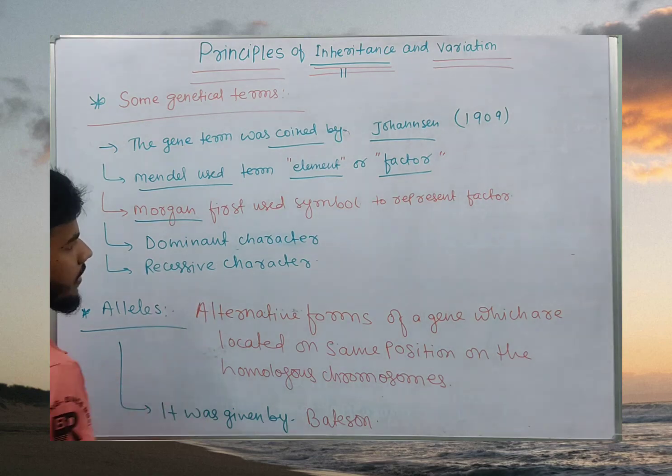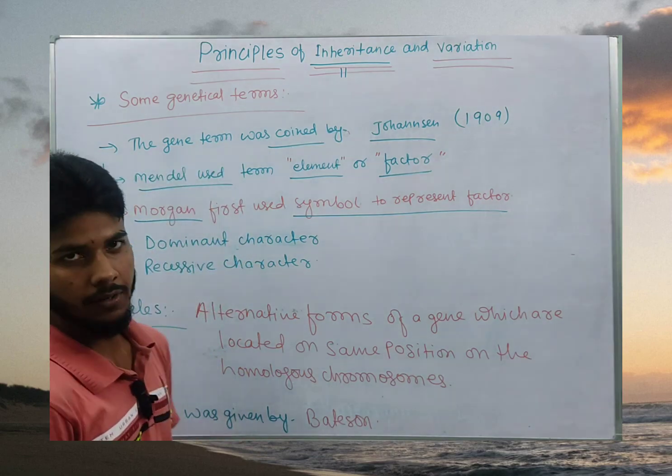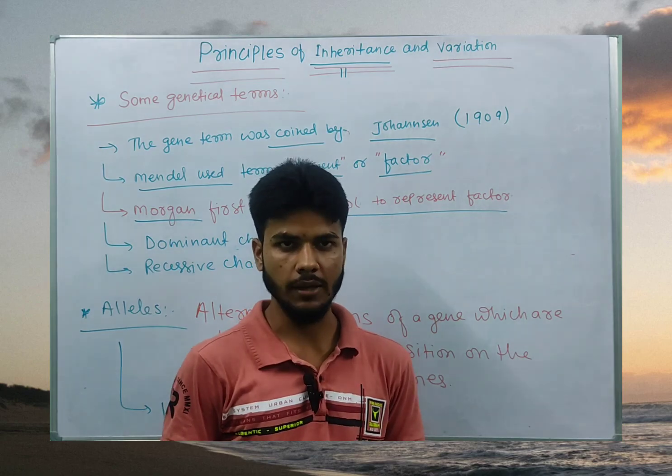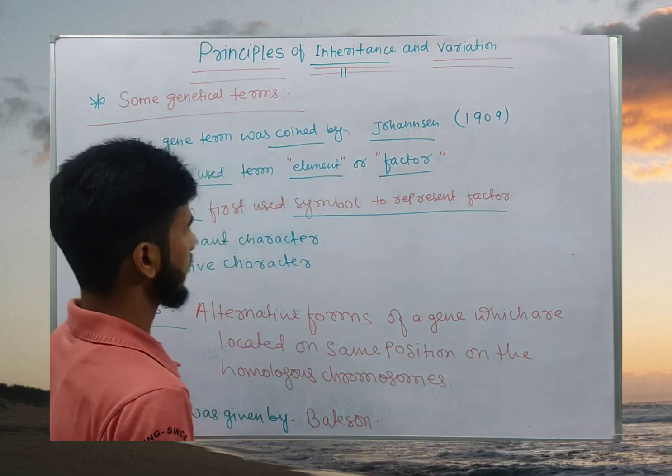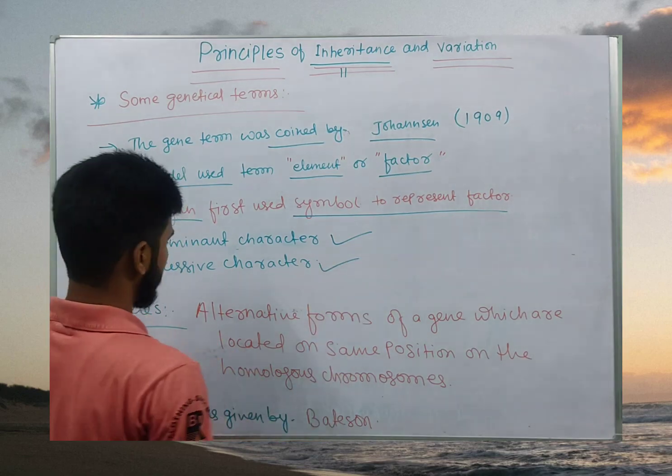In next, we have Morgan. He was the first scientist who symbolized to represent the factors. Like he used capital letters and small letters for dominant characters as well as recessive characters. We will discuss it later. We have dominant character as well as recessive character.